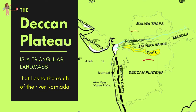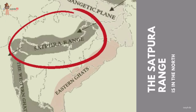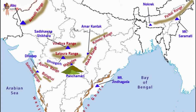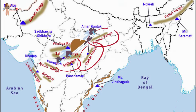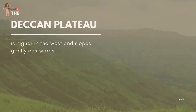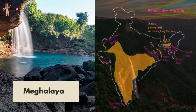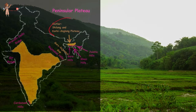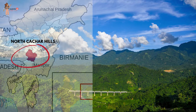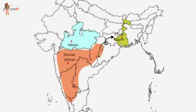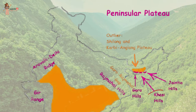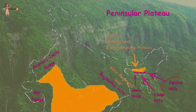The Deccan Plateau is a triangular landmass lying to the south of the river Narmada. The Satpura range flanks its broad base in the north, while the Mahadev, the Kaimur hills and the Maikal range form its eastern extensions. The Deccan Plateau is higher in the west and slopes gently eastwards. An extension of the plateau is also visible in the northeast, locally known as the Meghalaya, Karbi Anglong Plateau and North Kachar hills, separated by a fault from the Chota Nagpur Plateau. Three prominent hill ranges from west to east are the Garo, the Khasi and the Jaintia hills.